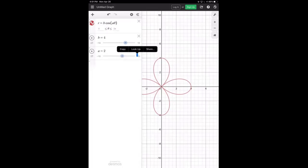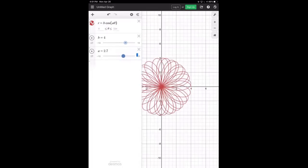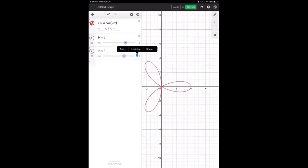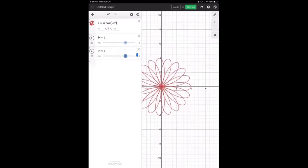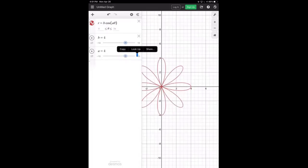So continue. Let's see for an odd number. We know that for an odd number, it's supposed to have exactly that number of petals, right? So when A is three, there it is. We've got three petals for A being three.